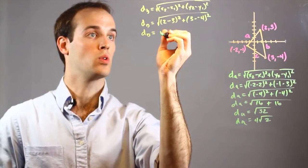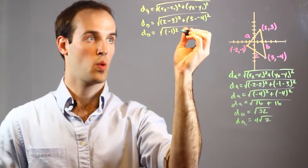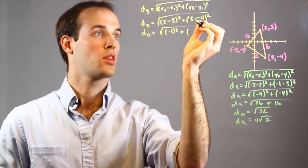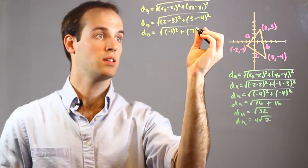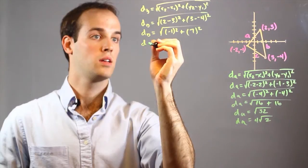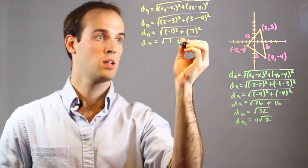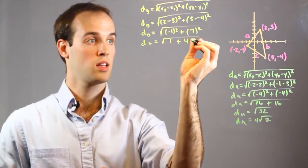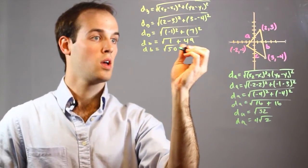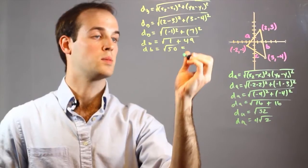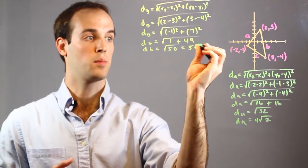D sub B equals 2 minus 3, which is negative 1, squared, plus 3 minus negative 4, which turns into 3 plus 4, which is 7, squared. D sub B equals negative 1 squared, which is 1, plus 7 squared, which is 49. And I have D sub B equals root 50, which I can then simplify by pulling out a square root of 25, which is 5, and I'm left with a root 2 — so 5 root 2.